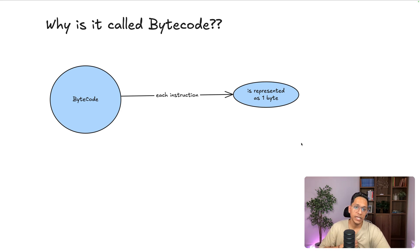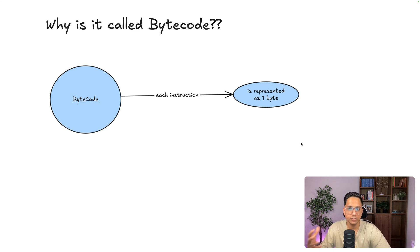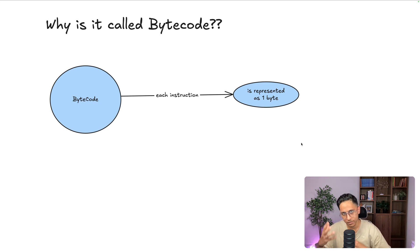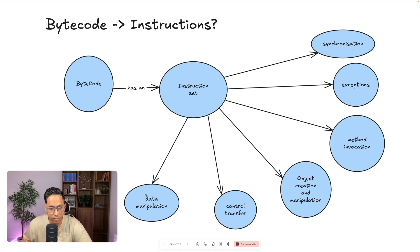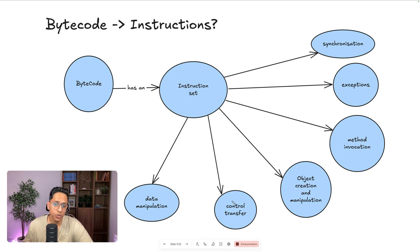Why is it called bytecode? Because each instruction is represented as one byte — the JVM specifies what instruction set it supports, and each instruction is represented as one byte. The bytecode instruction set has broad classifications: data manipulation — updating variables, references, and object properties; and control transfer — transferring control from one function to another or one instruction to another, with specialized instructions for that.